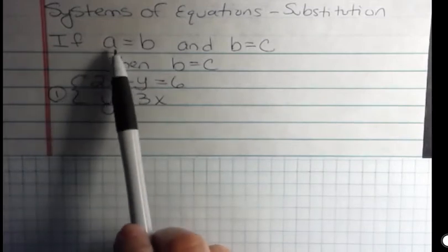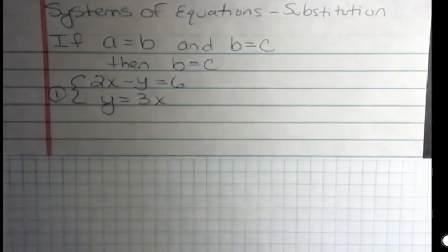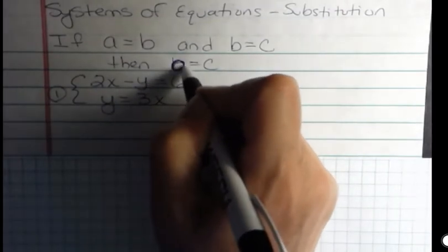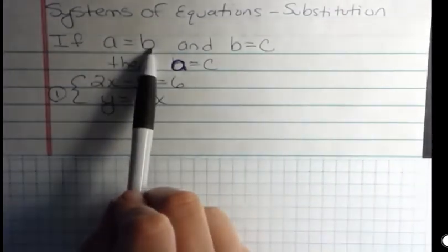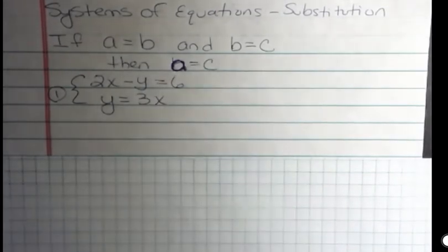Well, substitution method says this. If a equals b and b equals c, then that's really not what it says, then a equals c. If a is the same as b and b is the same as c, then a must be the same as c. That's kind of what the substitution method allows us to substitute things if we know that that's true.